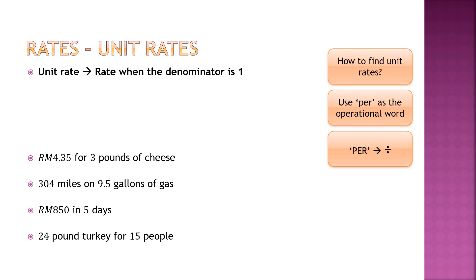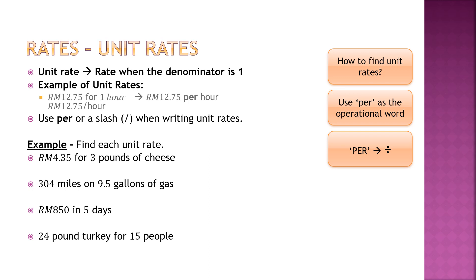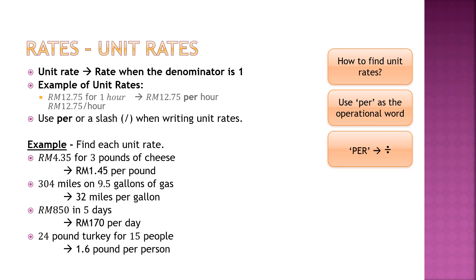Unit rate is when the denominator is one — each unit is how much. For example, $2.75 per one hour is a unit rate. You can use a slash or 'per'. For $4.35 for three pounds of cheese, the unit rate is $1.45 per pound. For 304 miles on 9.5 gallons of gas, it's 32 miles per gallon. For $8.15 in five days, it's $1.70 per day. For 24 pounds of turkey for 15 people, 24 divided by 15 gives 1.6 pounds per person.